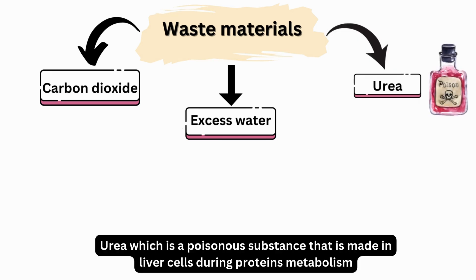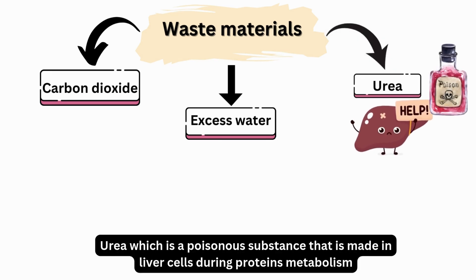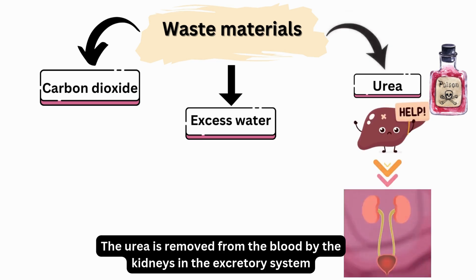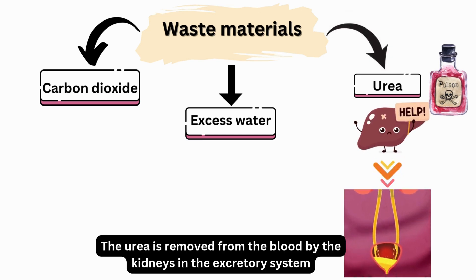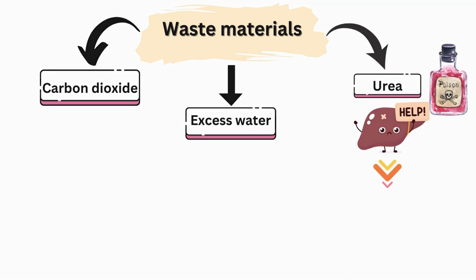Urea is a poisonous substance that is made in liver cells during protein metabolism. The urea is removed from the blood by the kidneys in the excretory system, as we will see in this video.